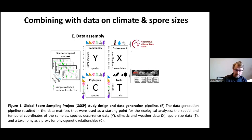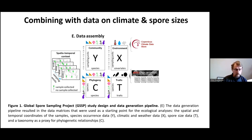In addition to the species data compiled with GSSP, we utilized environmental data — climatic data representing mean climatic conditions of the sites, as well as weather data from the time of sampling. As we are talking about fungal spores in the air as the main trait, we used the size of the fungal spores. Those data were extracted from the MycoBank database.